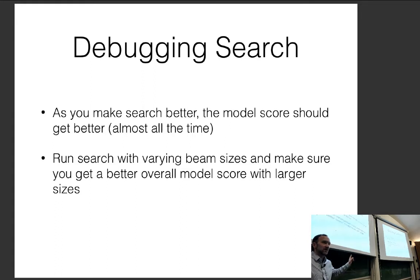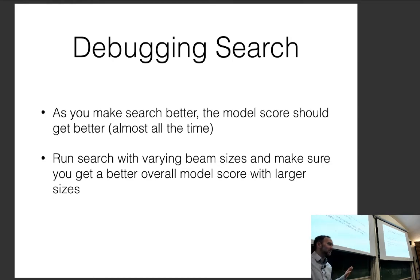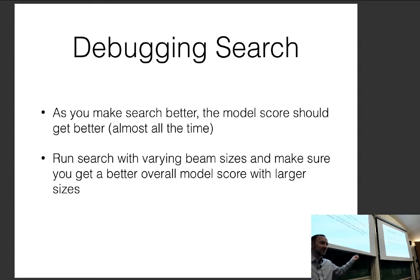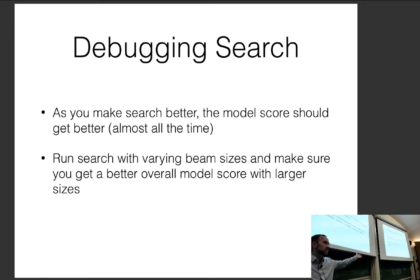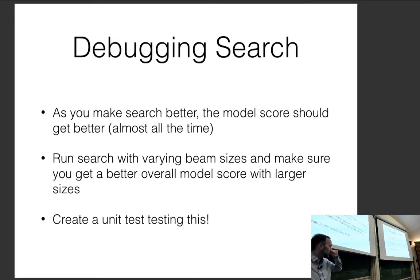You can run search with varying beam sizes and make sure you get a better overall model score with larger beam sizes. This isn't always guaranteed — you can construct pathological cases — but most of the time in real models, increasing beam size should give better scores. You can create a unit test for this. Also, another way to diagnose search bugs without unit tests: if you get really good loss on the training set but really bad accuracy on the training set, that's an indication your decoding algorithm doesn't work.